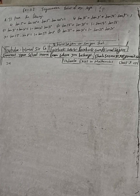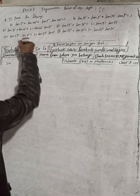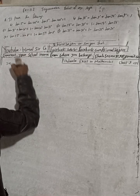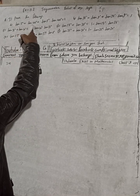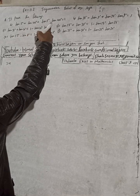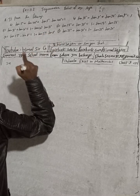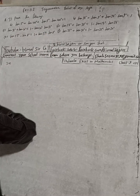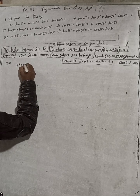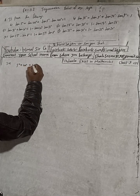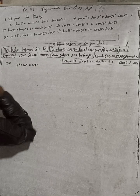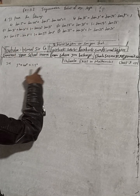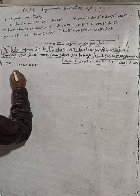Now here, this is the LHS: tan5° + tan40° + tan5°·tan40° = 1. We have to prove this. We can see the combination 5° and 40°, so we can write 5° + 40° = 45°.